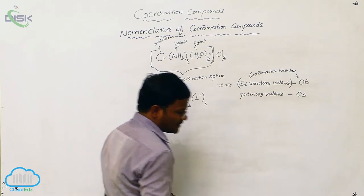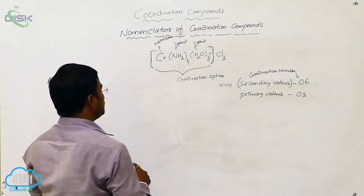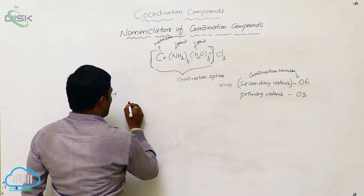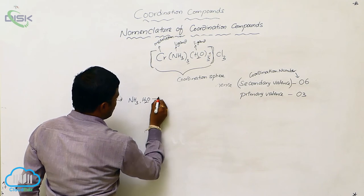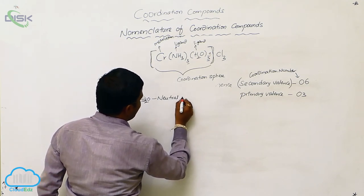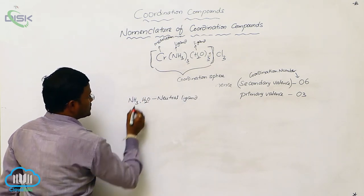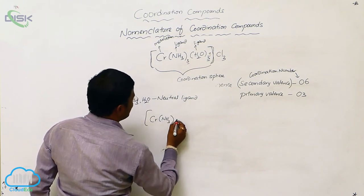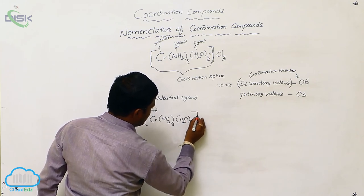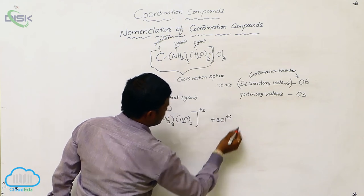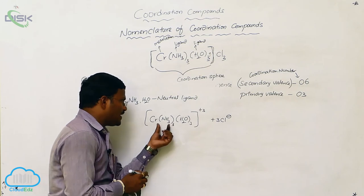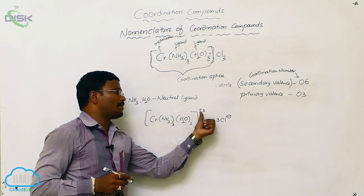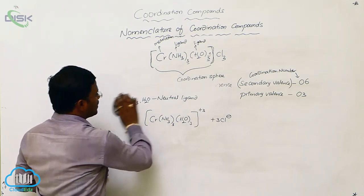The primary valency is satisfied by negative species only. Ammonia and water molecules are neutral ligands — NH3 and H2O carry no positive or negative charge. When this compound dissolves in water, it dissociates to produce [Cr(NH3)3(H2O)3]³⁺ and three Cl⁻. Since ammonia and water are neutral species, the overall oxidation state of chromium is plus three.